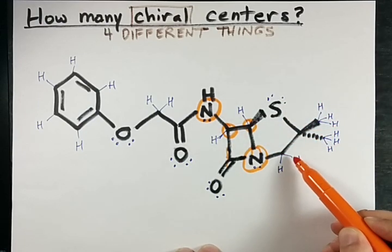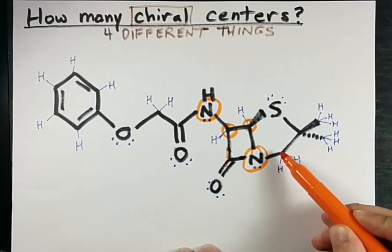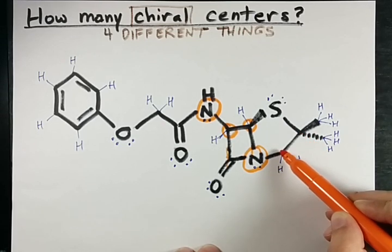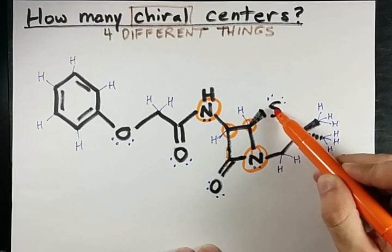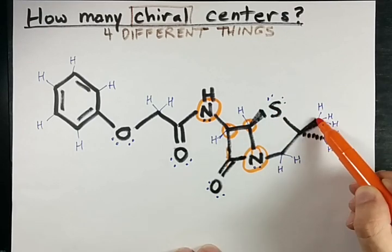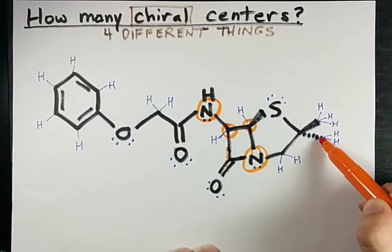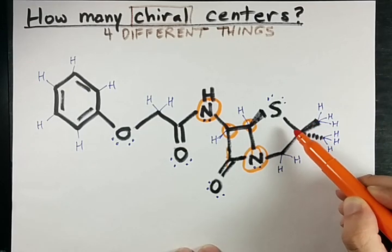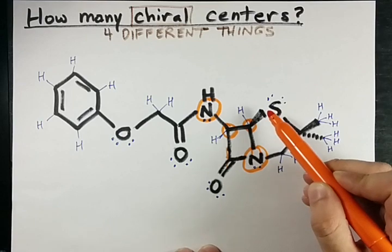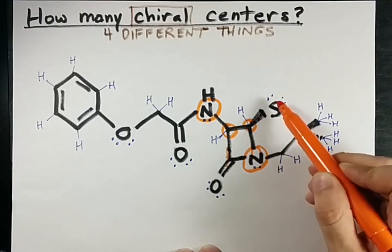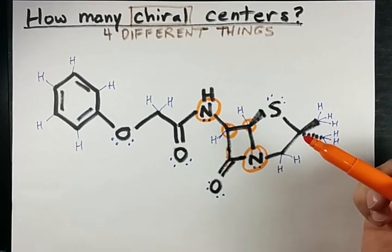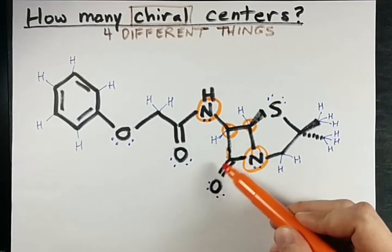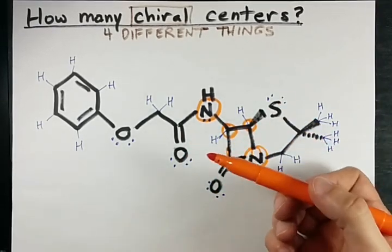This carbon is connected to two hydrogens — those are not different, so it's not chiral. This carbon is connected to CH2N, a sulfur in this direction, a CH3 here, and a CH3 here — those two methyl groups are the same, so not chiral. This sulfur has two lone pairs, so it's not chiral because they're the same. I think we've gone through all the atoms — maybe not this oxygen, but it's only connected to one thing.